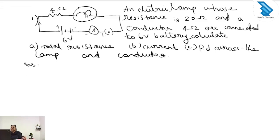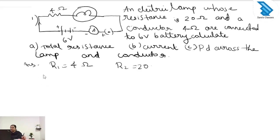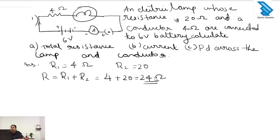What is given in the question? The resistance of the lamp is given as 20 ohm and the resistance of the conductor is given as 4 ohm. We can find the total resistance. R1 is taken as 4 ohm and R2 as 20 ohm. Total resistance R is equal to R1 plus R2, which is 4 plus 20, giving 24 ohm.